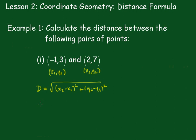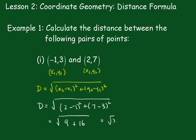So now it's a simple matter of substituting those points in. D equals the square root of, so it's x₂ which is 2 minus negative 1, all squared, plus 7 take away 3, all squared. That's going to give me the square root of 9 plus 16, and that gives me the square root of 25, which equals 5 units.